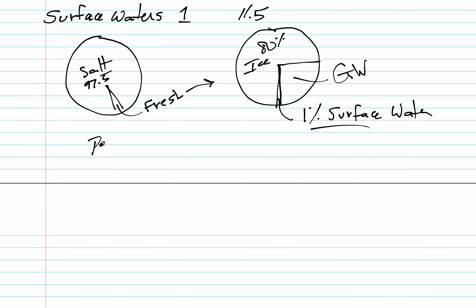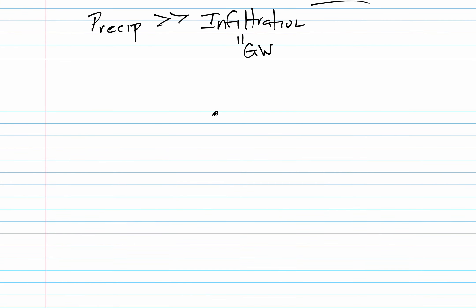The key for surface waters is when you have a situation where precipitation is much greater than infiltration, then water will exist on the Earth's surface. Infiltration is going to lead to groundwater, which is a topic for another day. So we're in this situation where precipitation outpaces infiltration and we get this word runoff, where water is running across the surface of the Earth.